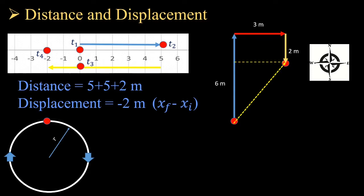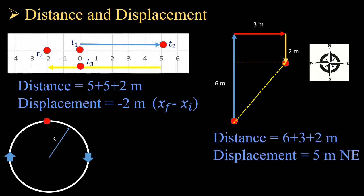In example 2, a man travels 6 meters due north, 3 meters due east, and 2 meters due south to reach his house. The total distance is 6 + 3 + 2 = 11 meters. To find net displacement, we draw a line connecting the start and end positions. Using the Pythagorean theorem with sides of 3 meters and 4 meters, the displacement magnitude is 5 meters in the northeast direction.